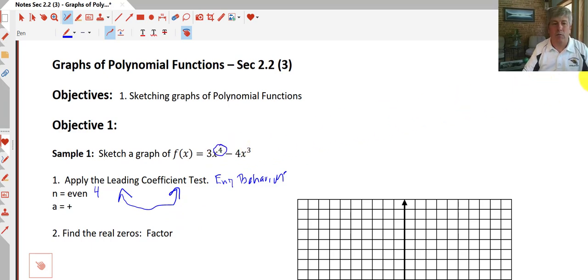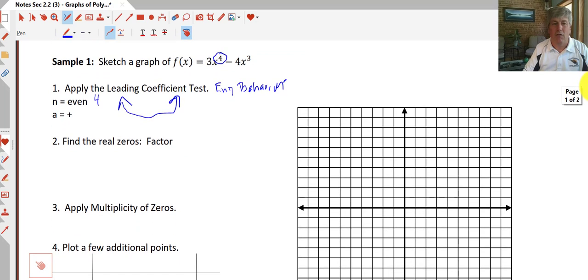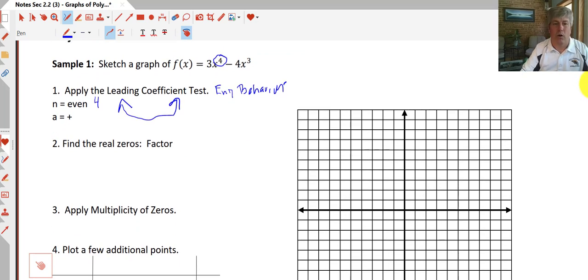So the next thing we want to do here is find the real zeros. So we'll do that by factoring. So we set our function equal to 0 and we factor that. We can factor out an x^3, leaving us with 3x - 4. So at most we can have 4 real zeros. Well, 3 of them are here at 0. So we get x = 0 and that's going to be a triple root.